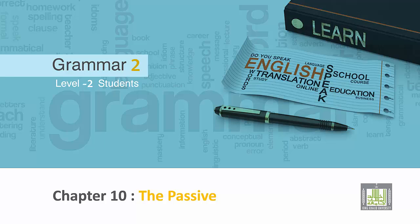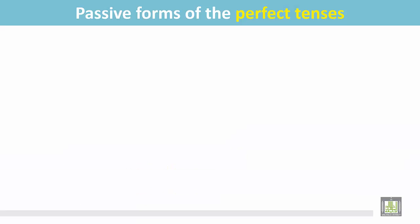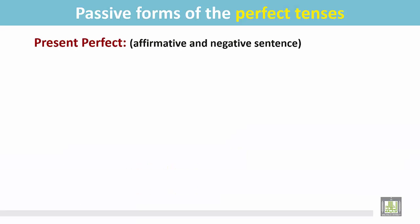Grammar 2 for level 2 students. Chapter 10: The Passive. Passive forms of the perfect tenses. Present perfect — affirmative and negative sentences.